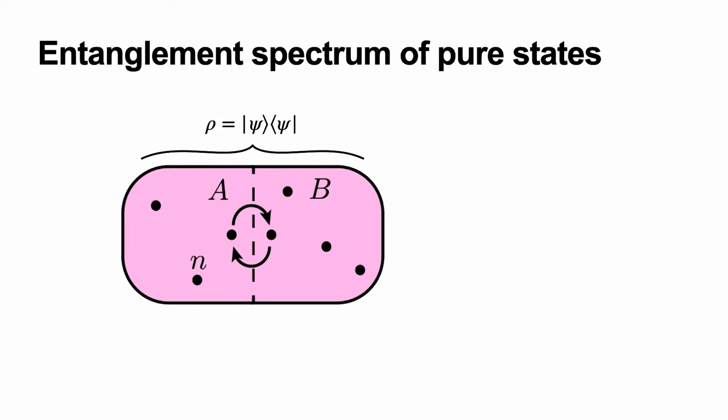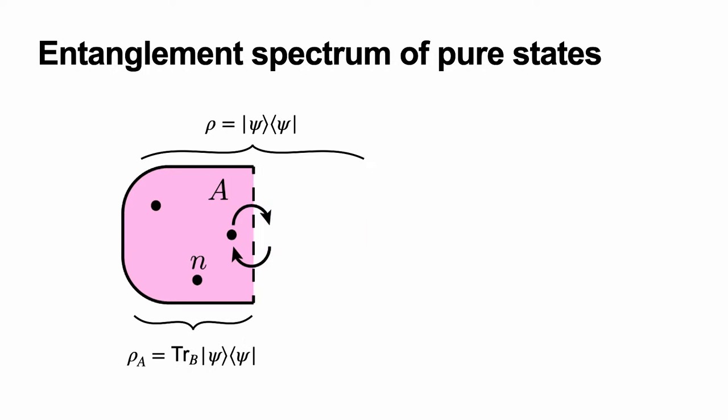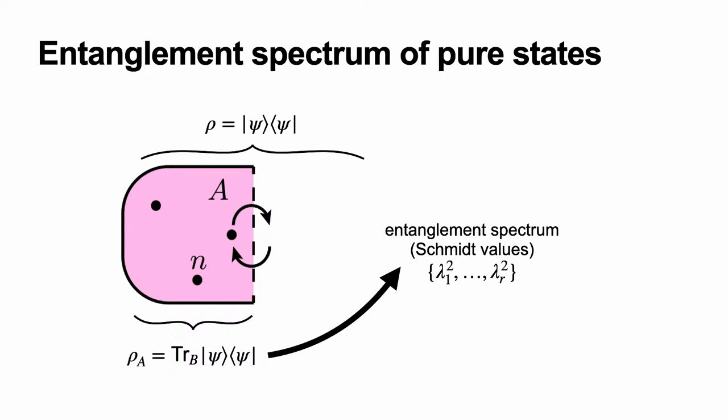For pure states, we have two subsystems A and B. The two of them can interact with each other but not with any environment — it's completely isolated. Because it's a pure state, we can describe it by the state vector psi, or equivalently with the density matrix, which is, for the pure state, a rank-one matrix. If you want to access the correlations between subsystem A and subsystem B, one way is to trace out the degrees of freedom of one of the subsystems using the partial trace, here shown at the example of subsystem B, giving us the reduced density matrix of subsystem A only.